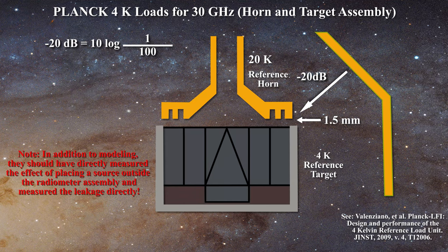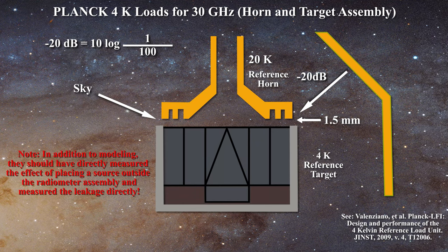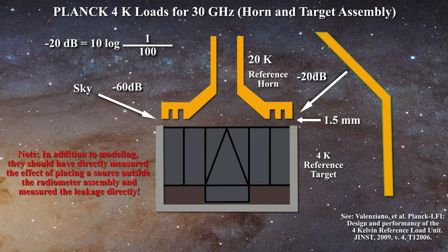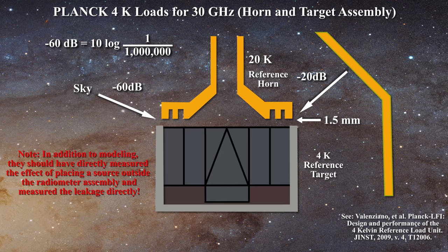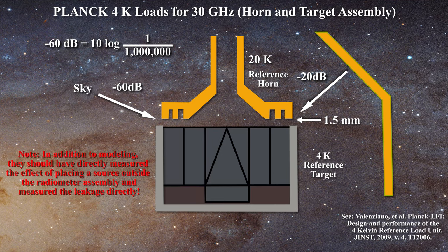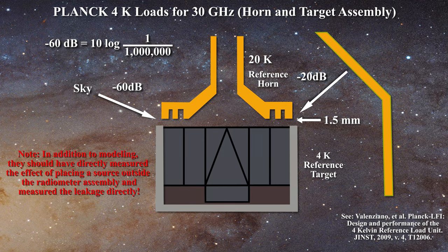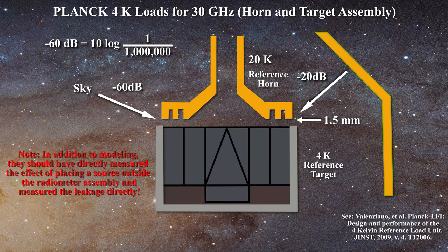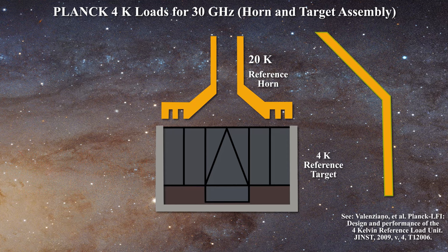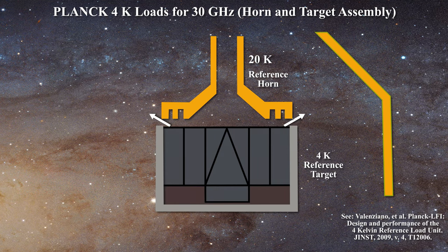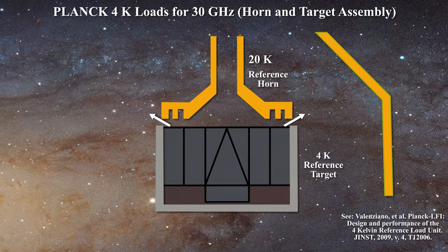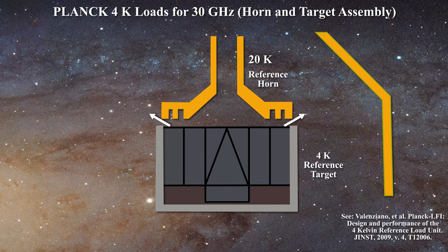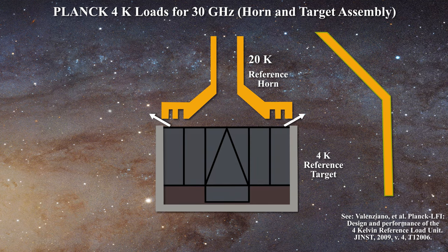They also have to address stray sky signals and here they argue for a rejection on the order of minus 60 dB. That is a factor of roughly a million. These numbers are very dependent on proper modeling of all boundaries and interfaces, which is not a trivial problem at these frequencies. As such, these numbers should be taken with a grain of salt. But the Planck team does not quantify the signal loss from the 4K load itself to the outside. Based on the 20 dB rejection of the 20K signal, one might assume a 1% loss, which is not much. But we will return to this issue.